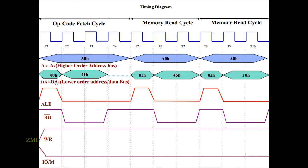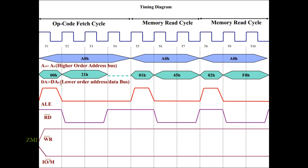The higher order address is A001, A002 — they are changed in the same way. The address changes in the same way. The instruction codes are 21H, 45H, and F0H. The lower order address bus and ALE — Address Latch Enable — are shown here. T5 is the start of the first cycle.